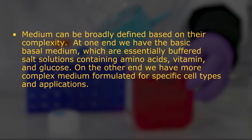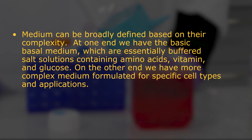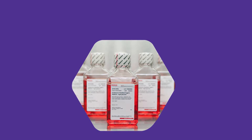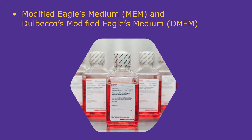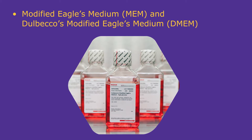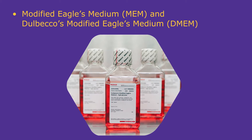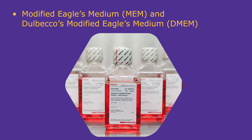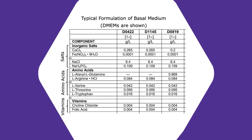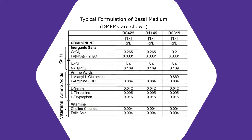At one end, we have the basic basal media, which are essentially buffered salt solutions containing amino acids, vitamins, and glucose. On the other end, we have more complex media formulated for specific cell types and applications. For example, commonly used basal media such as Modified Eagle's Medium (MEM) or Dulbecco's Modified Eagle's Medium (DMEM) contain no protein or growth-promoting agents. When supplemented with serum, these basal media are considered complete media and can be used for culturing a wide range of cells.